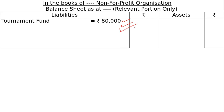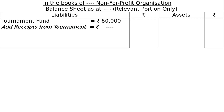If you receive more into the tournament fund, it will be added. Add receipts from the tournament – for example, sale of tournament match tickets. Those receipts from the tournament will be added here to the tournament fund. The amounts received are added, and what we spend is deducted, and we show the final balance – the tournament fund balance.